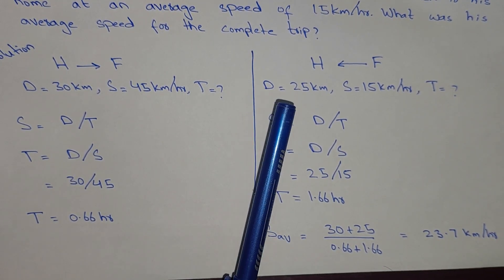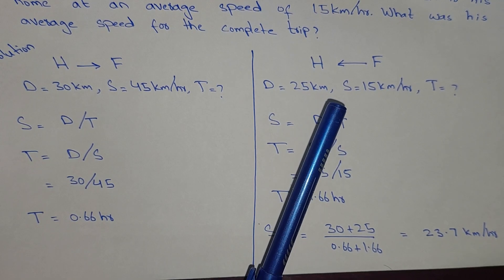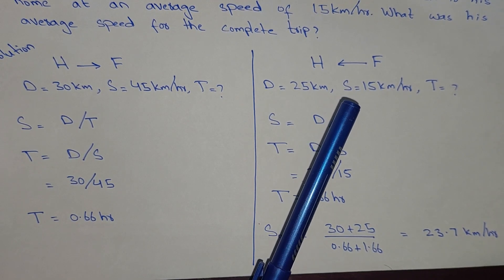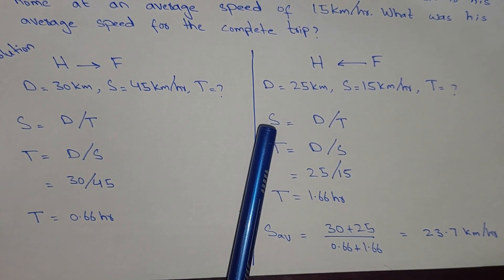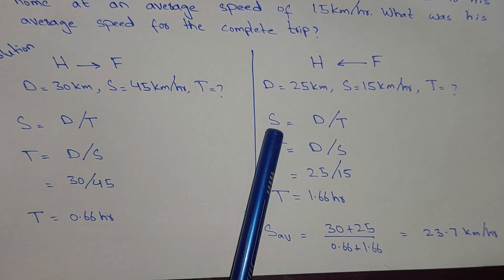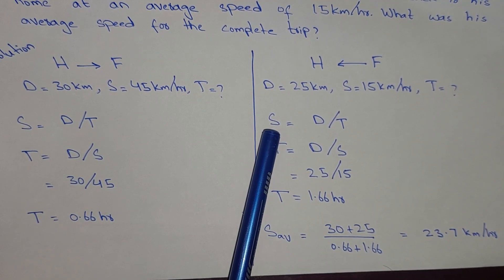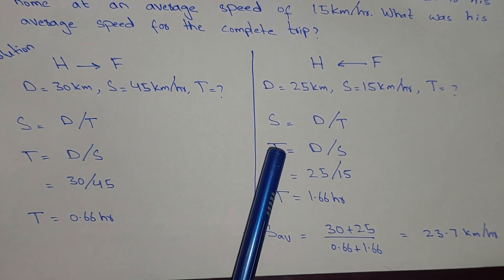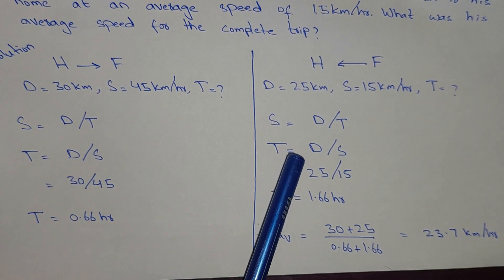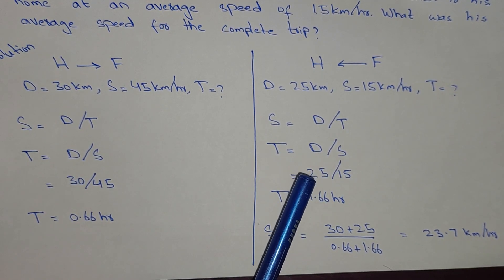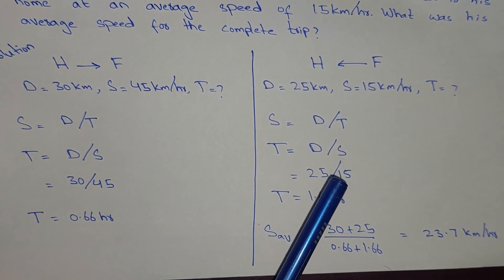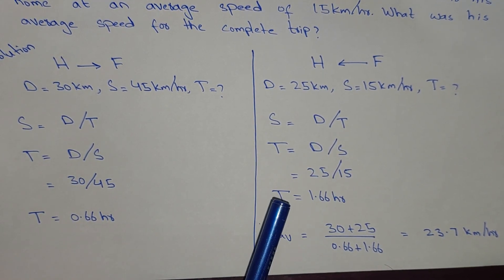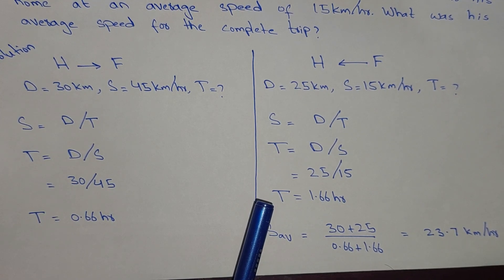When he was coming back from his friend's home, he covered a distance of 25 kilometers at a speed of 15 kilometers per hour. We need to find the time. Speed equals distance over time, so time equals distance over speed: 25 divided by 15.